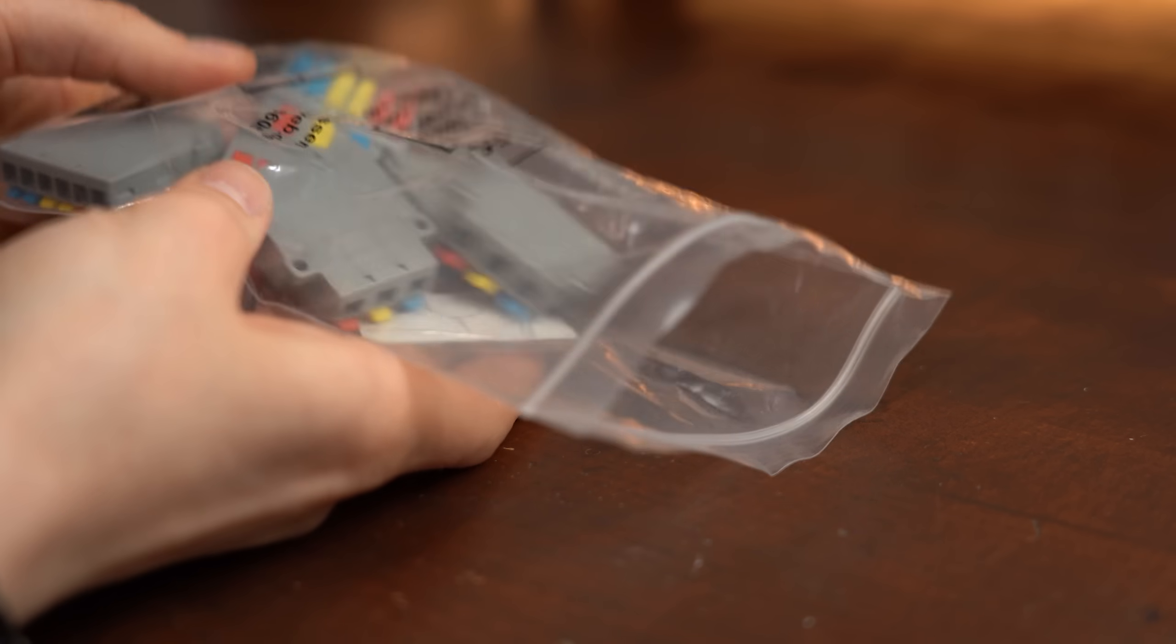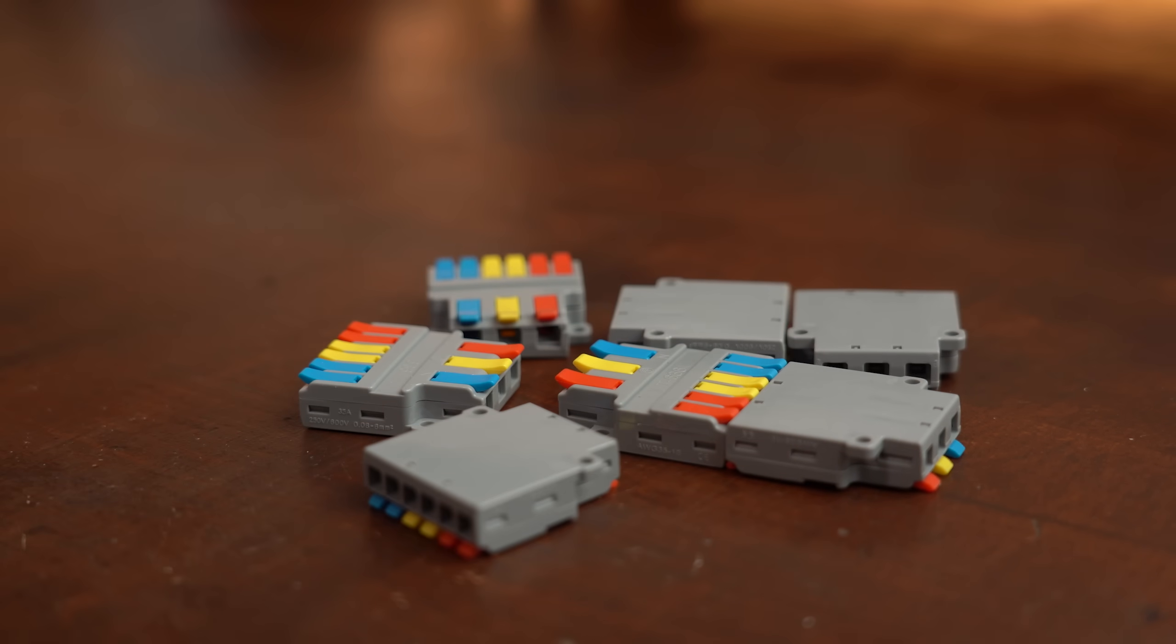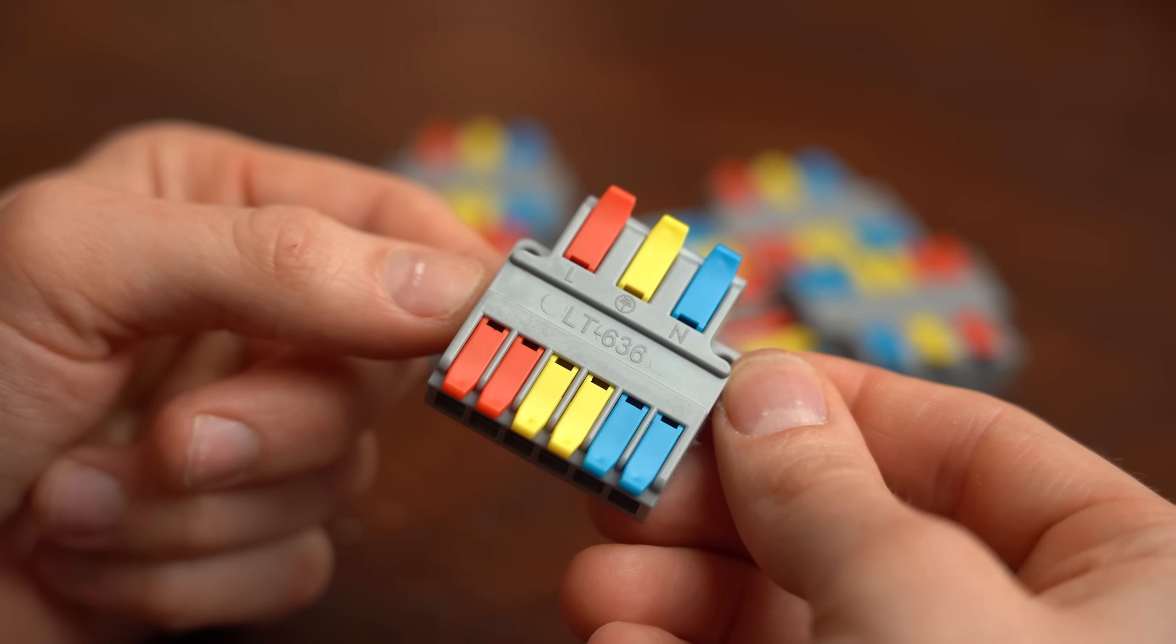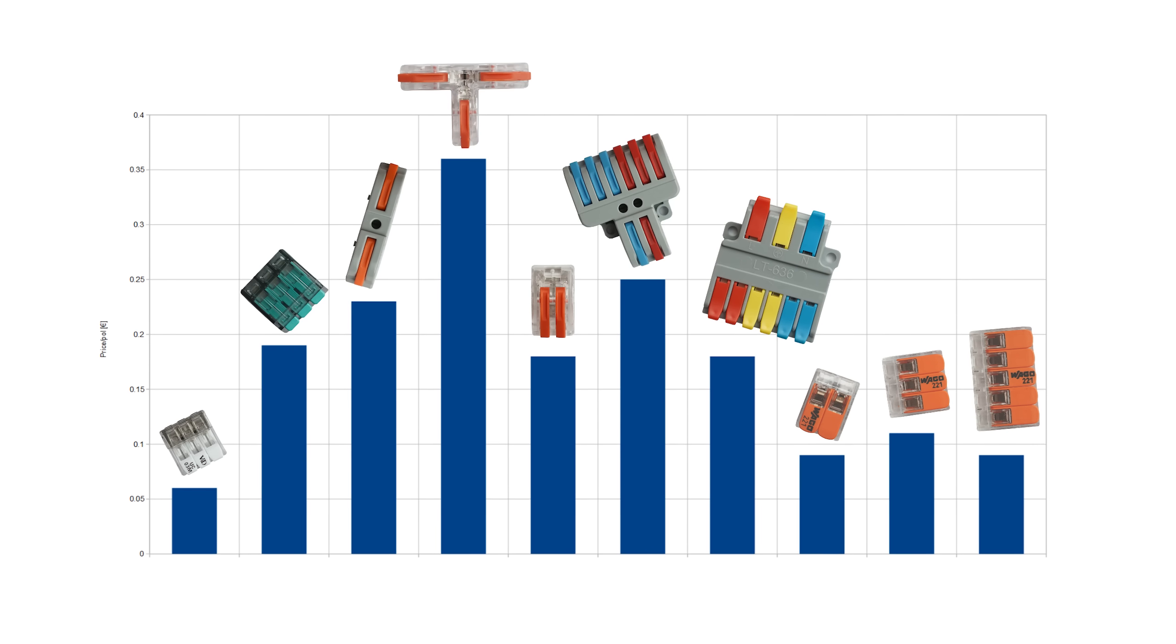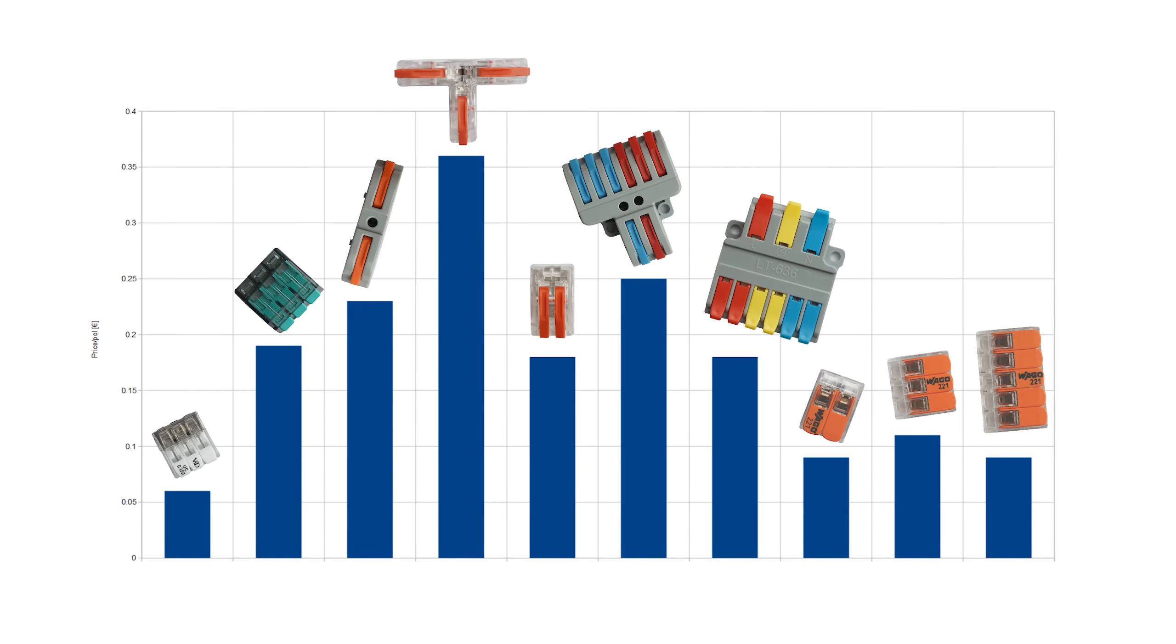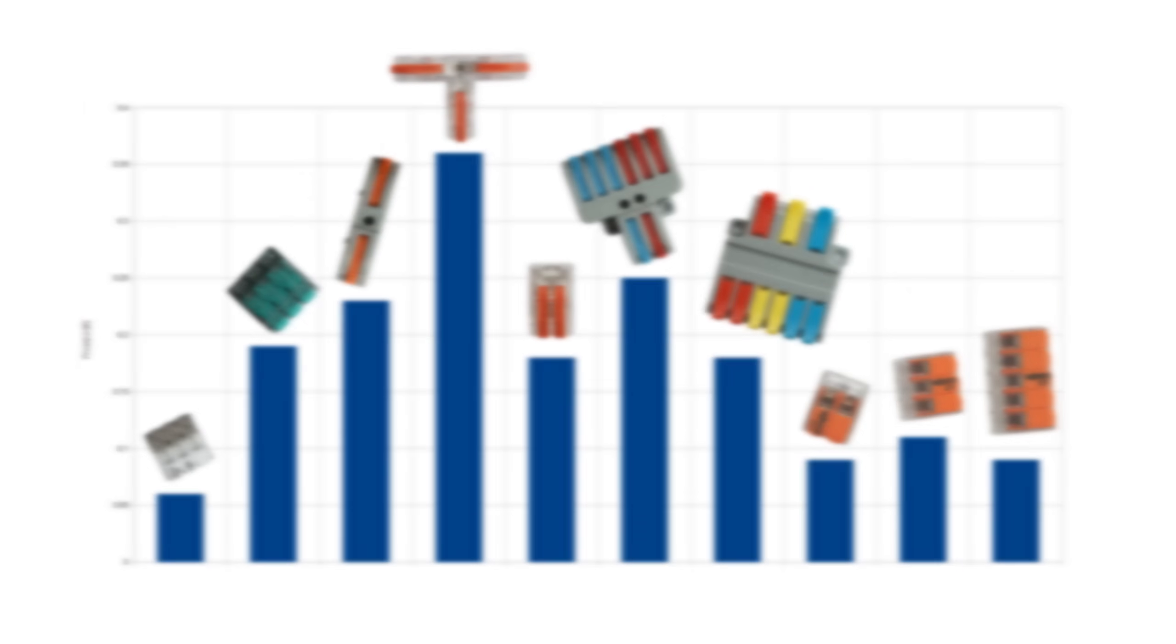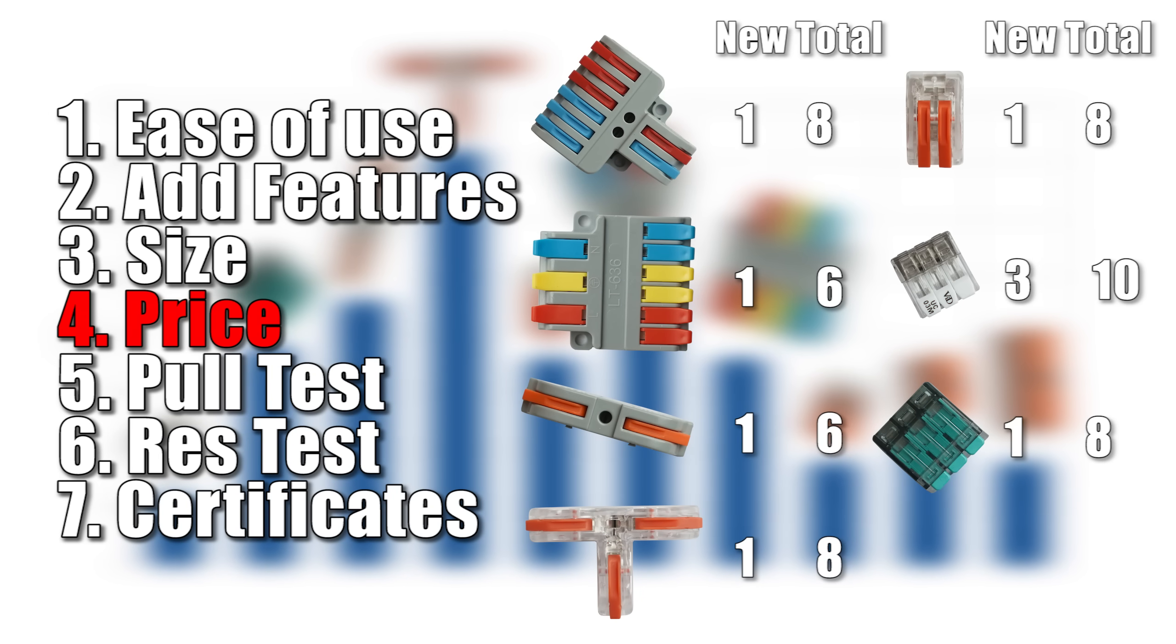Now you might be saying that is only the case because some connectors only come with a few units since they are featuring way more connection points. But if we calculate the price per connection point, then we can still see that VID and WAGO are the two winners here. That is why the VID connectors get 3 points while the other ones only get 1 point.